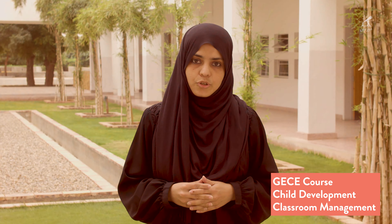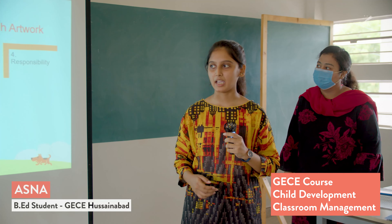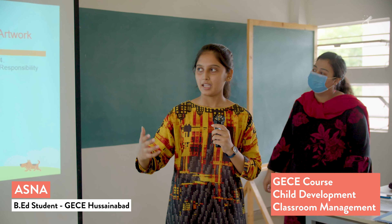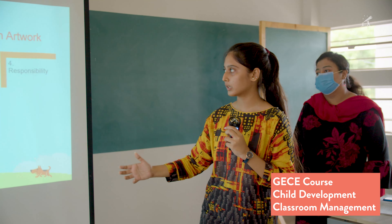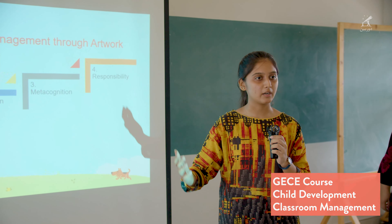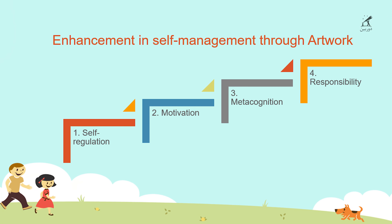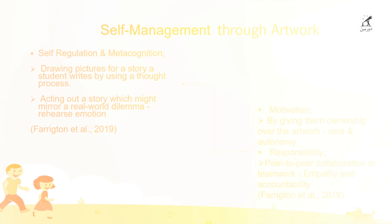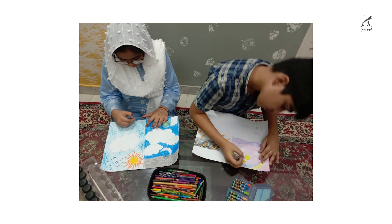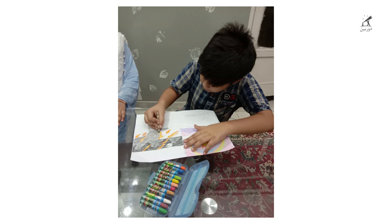We noted that our art piece is targeting self-management, which encompasses four major stages: the first stage is self-regulation, then motivation, then metacognition, and then responsibility. We explored how children's artwork can be used to improve self-management across these stages.